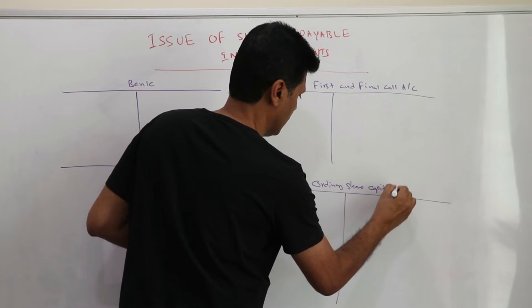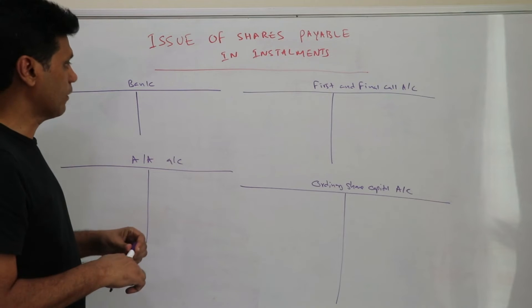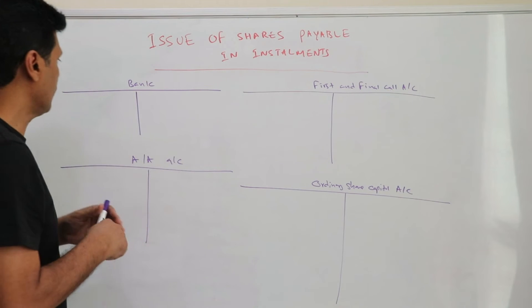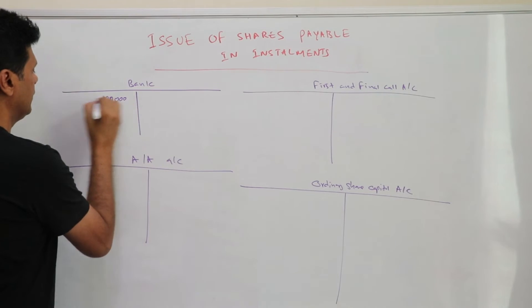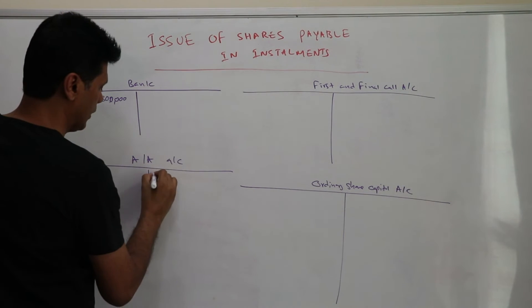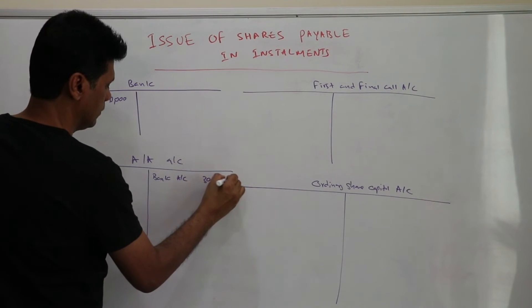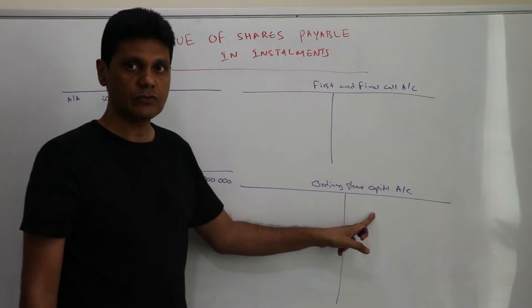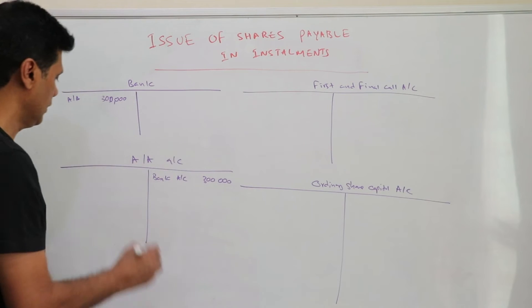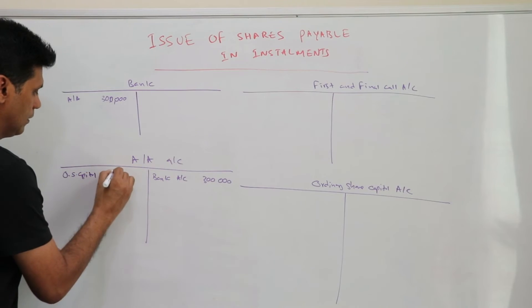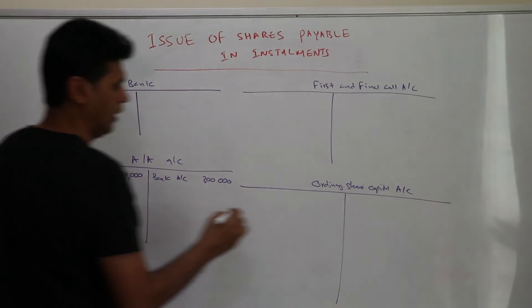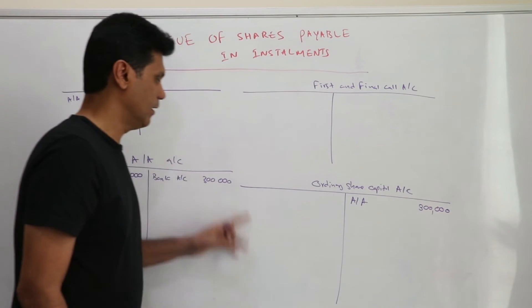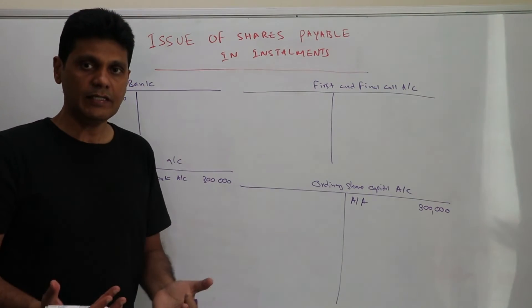First, we record the application money received, which is $300,000. The bank account is debited $300,000 and the application and allotment account is credited. Then this amount is transferred to the ordinary share capital account: the ordinary share capital account is credited $300,000 from the application and allotment account.